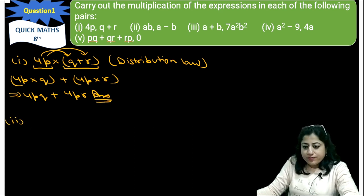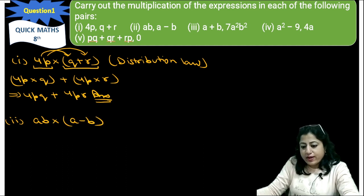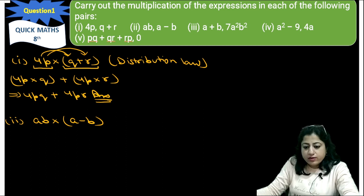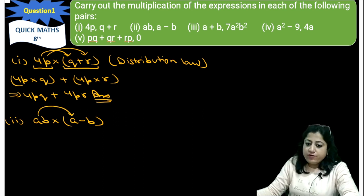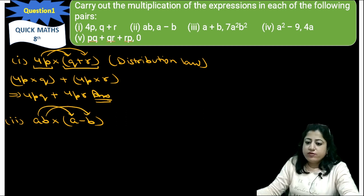Now, second part. In the second part, it is ab multiplied with the binomial (a − b). In a similar manner, ab will multiply with a first, and then it is multiplied with minus b.